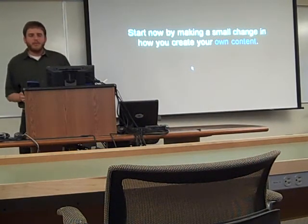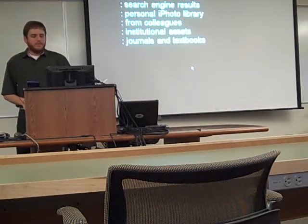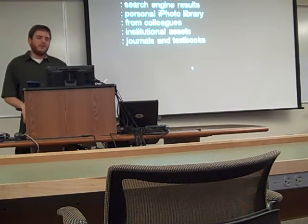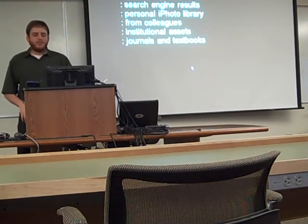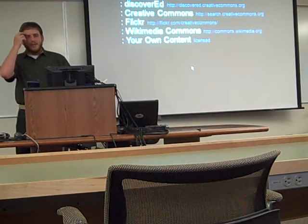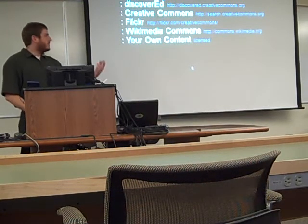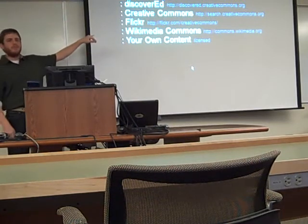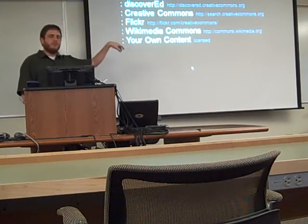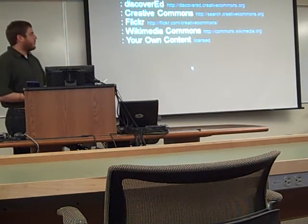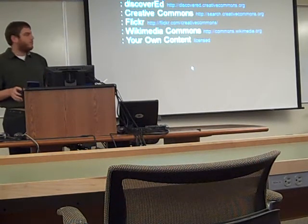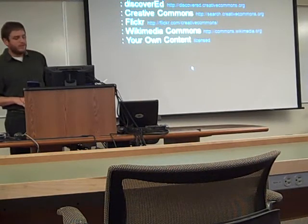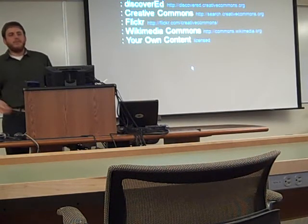You can basically start now by making a really small change in the way that you create your own content. The older way of doing things is going to Google and finding the first image you get, or going through your personal iPhone library, or using other people's stuff from your institution — but those might not be openly licensed. So instead, go places like Flickr, which has a way to search for only Creative Commons licensed material. Or Wikimedia Commons — they're actually a little bit more strict than Flickr, so everything on Wikimedia is openly licensed. Or Discover Ed and Creative Commons. Or you can just use your own content, the photos that you took, and license those.